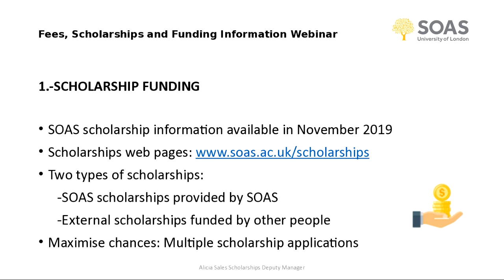There are two types of scholarships you may be eligible for: SOAS scholarships and external scholarships. External scholarships are those funded by the government, organisations, or charities with an invested interest in higher education. For example, non-UK students can apply for funding from the UK government through Chevening Awards and Commonwealth scholarships. These external awards are not administered by us, so you will need to contact the external organisation directly for further details and application procedures.